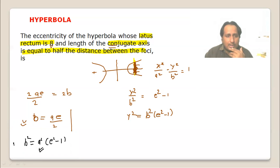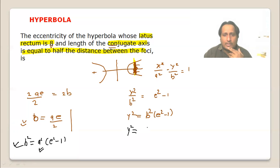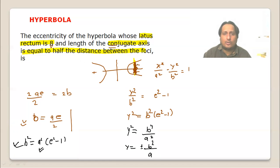This result is worth remembering: for standard hyperbola and ellipse, length of latus rectum = 2b²/a. For parabola it is different. We are given latus rectum = 8, so 2b²/a = 8.